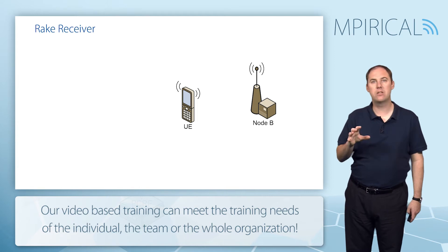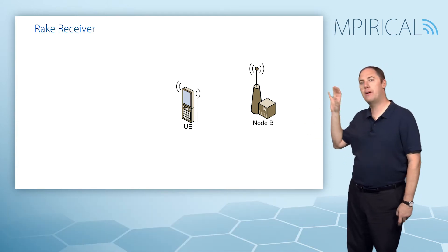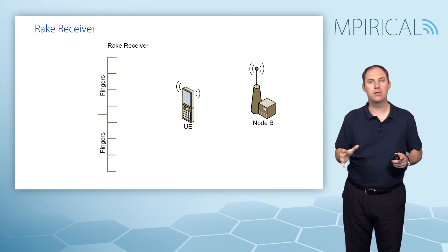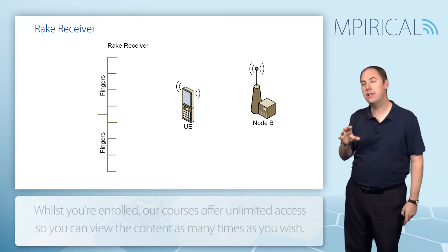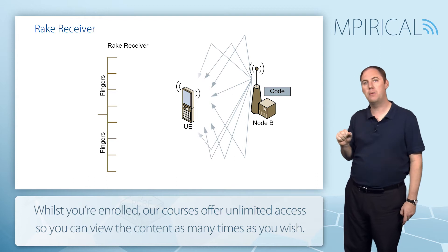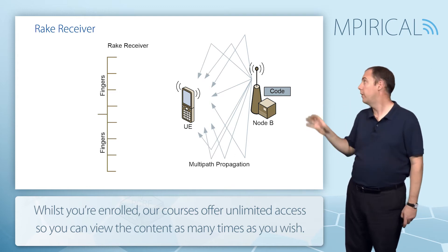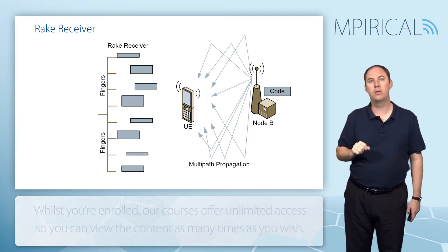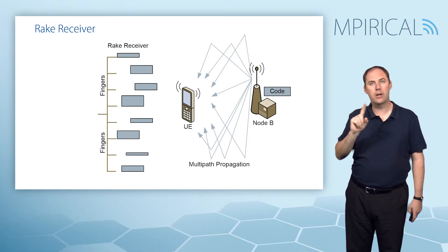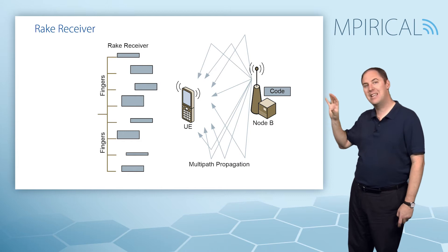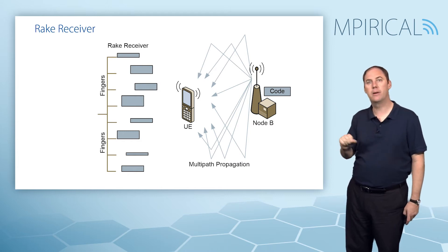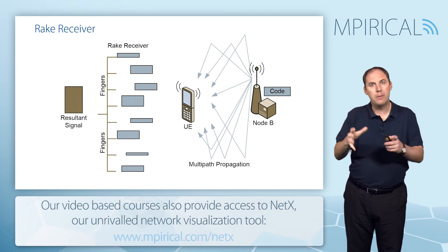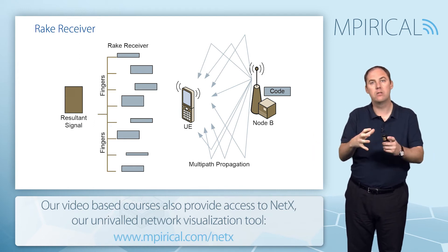Before we get into the details of the soft handover procedure, let's talk about the rake receiver. In a mobile we have a rake receiver with many fingers. The idea is these fingers can lock onto the different multipaths from a Node B. We've got a code coming off this Node B and we can put fingers onto the different multipaths — each finger looking at a code potentially with a different delay or time aspect. We can take all the information from the fingers and sum it together as a resultant signal.